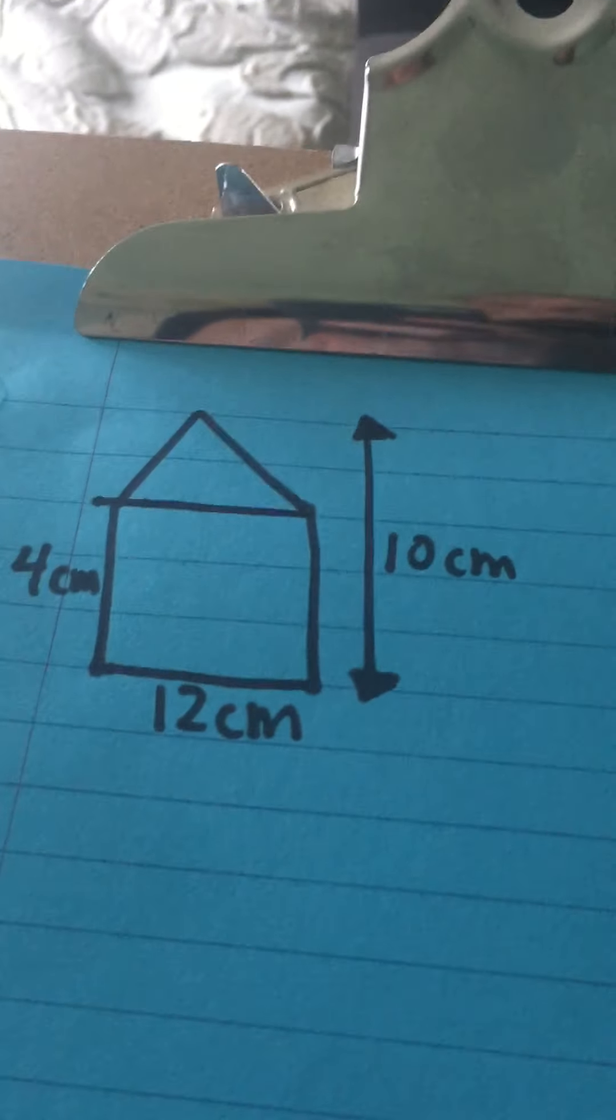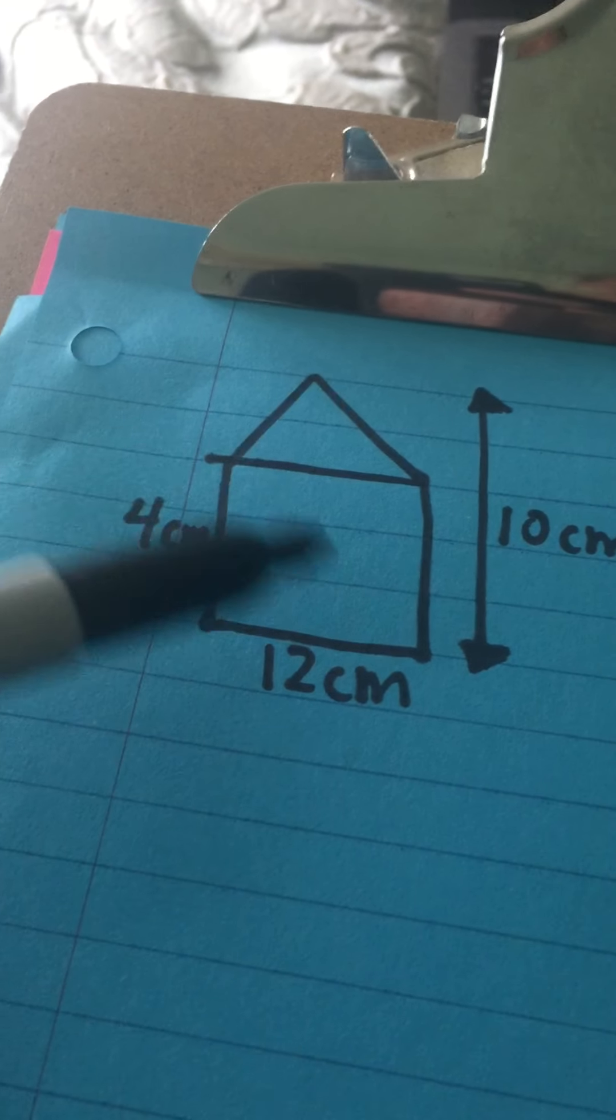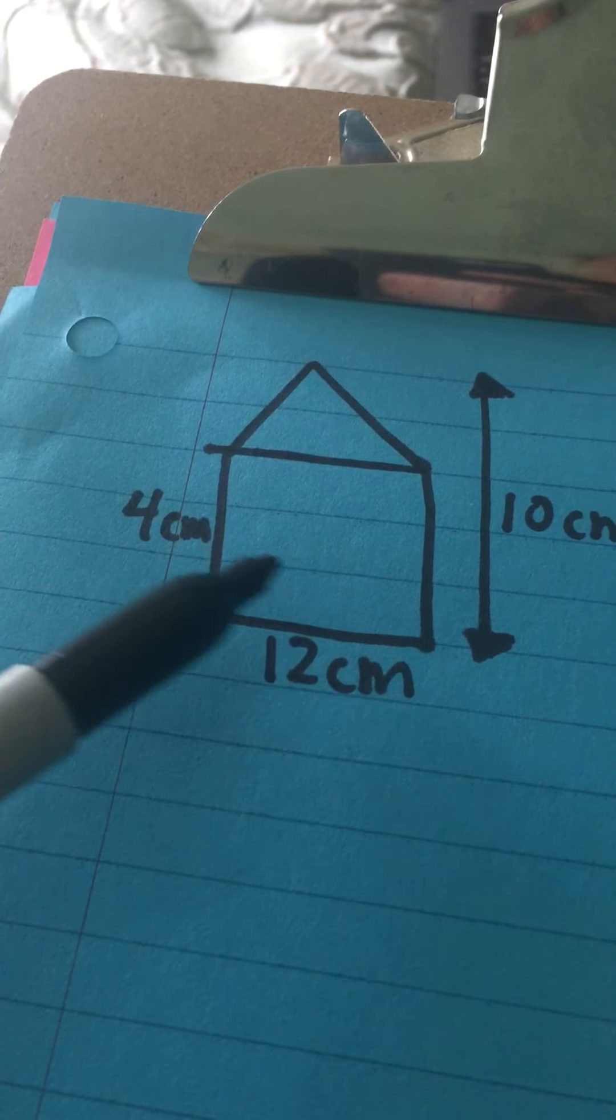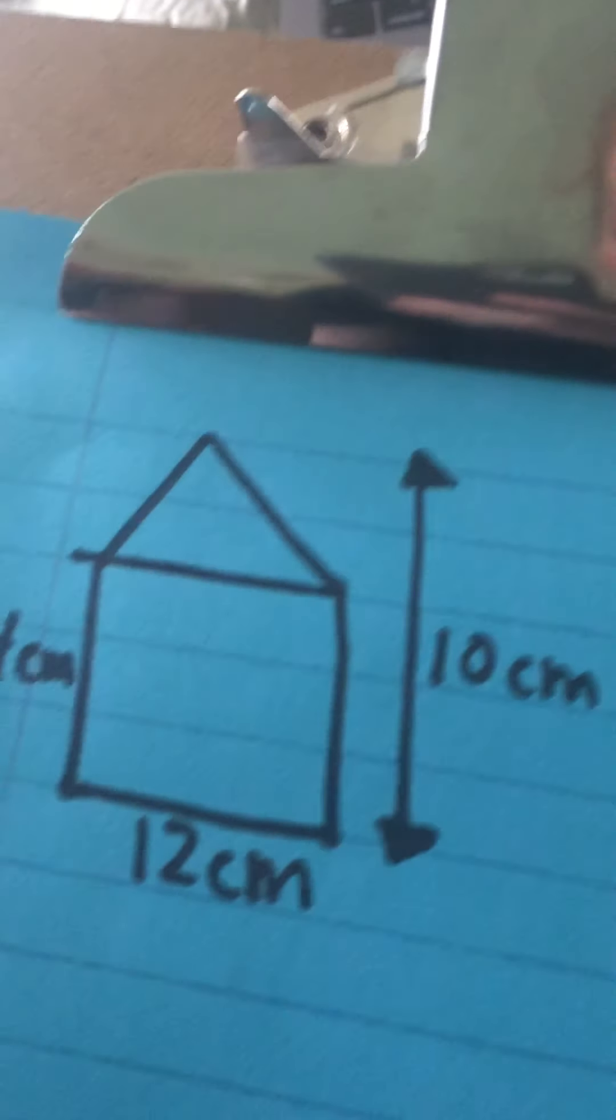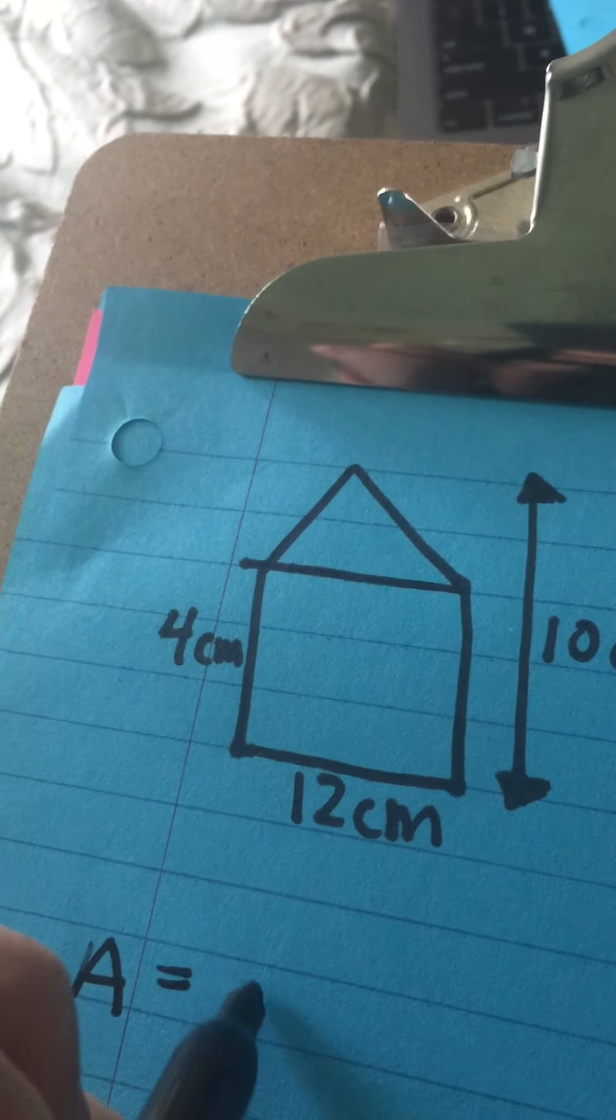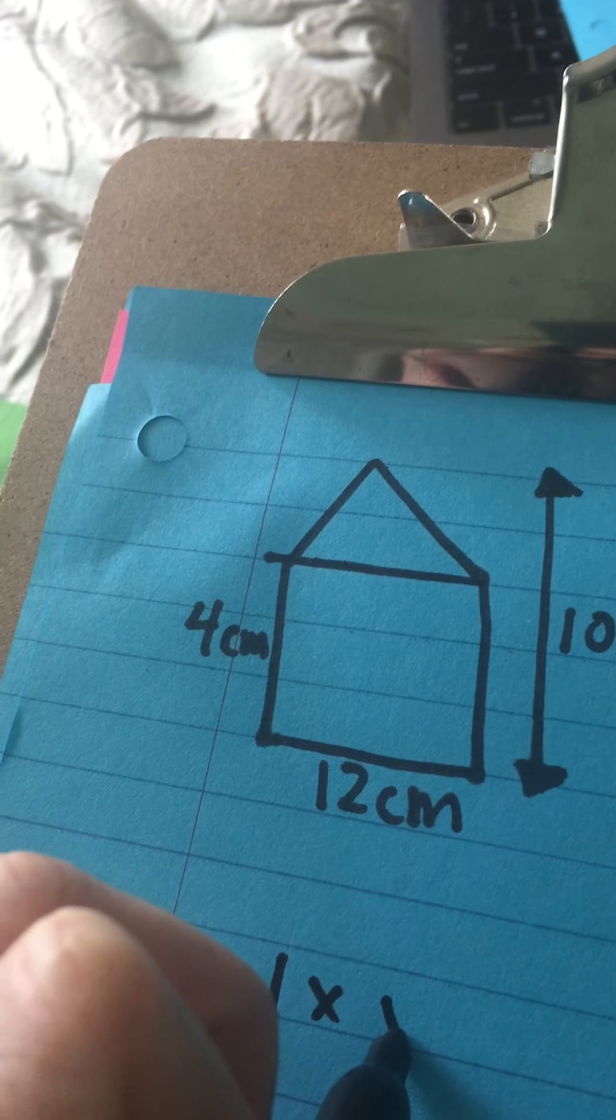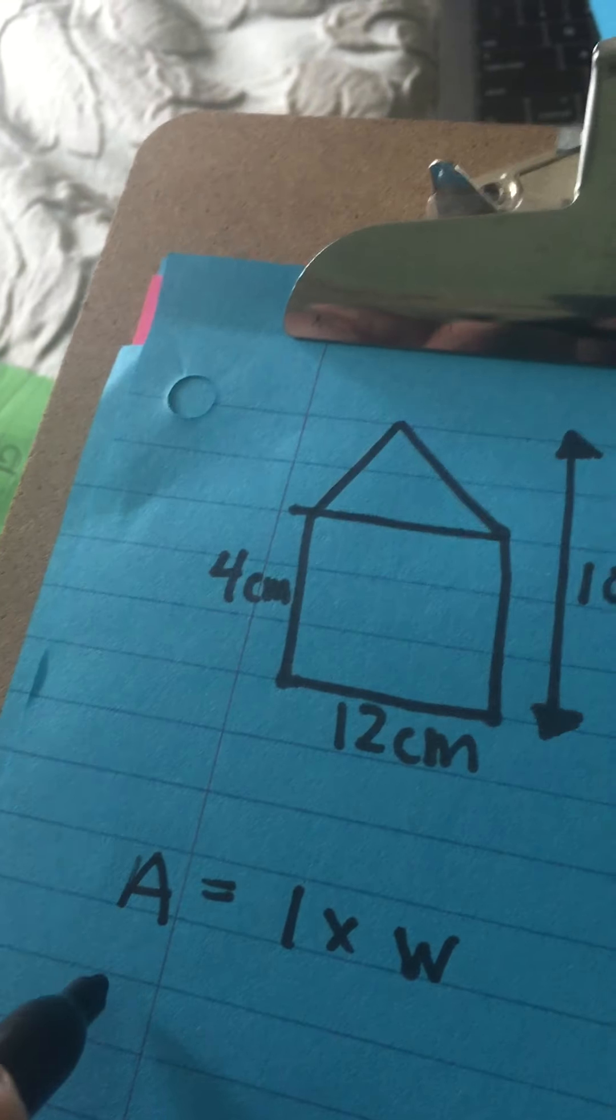But like I told you before, we need to be a bit of detectives. We already have everything we need to find the area of this rectangle here. We know that area for a rectangle equals length times width. We have the length and we have the width, so let's do it.